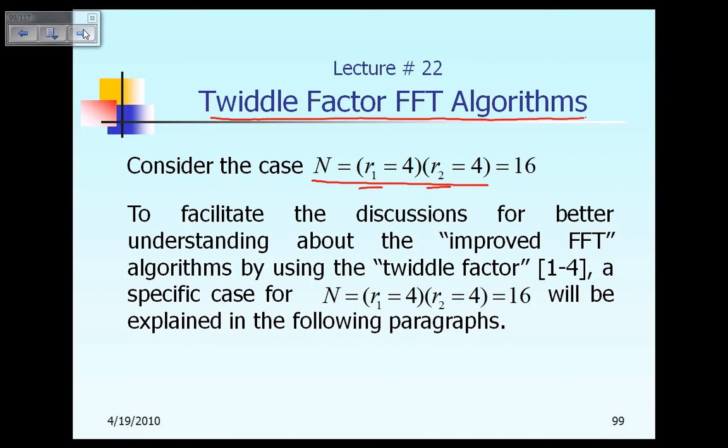But again, the idea presented in this chapter can be generalized to a different value for R1 and a different value for R2. And the same idea can also be extended further so that capital N can be expressed as R1 times R2 times R3, and so on, times R sub M. But to simplify the discussion, we just focus on the development of the idea of Twiddle Factor for capital N equal to R1 times R2. And specifically, R1 equal to 4 and R2 equal to 4.